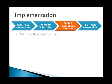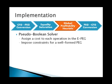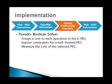We implement a global profitability heuristic using a pseudo-Boolean solver, a variant on integer linear programming. We assign a cost to each operation in the EPEG and impose constraints so that the PEG selected is well-formed. Then we ask the pseudo-Boolean solver to minimize the cost of the PEG it selects. We then take that selected PEG and convert it back into a control flow graph to produce our optimized program.